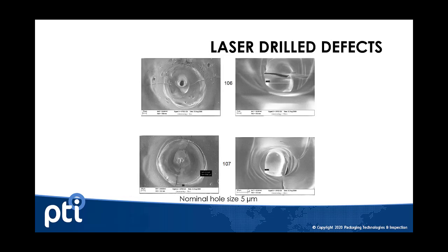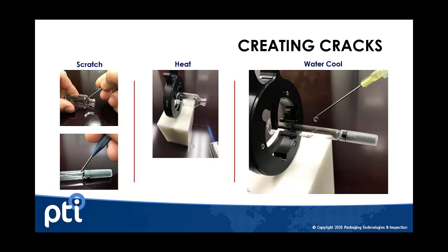One method for producing positive controls is laser drilling. In laser drilled defects, the laser is actually removing material from the defect site, and the defect size is validated after the fact using a certified flow measurement. That's how we can prove the defect is as close to a true defect as possible. You can see that these defects are not just pure holes, but are in fact complex in their geometry.